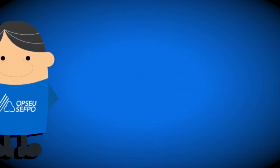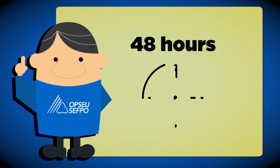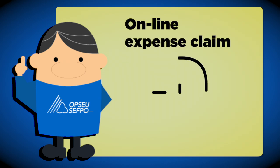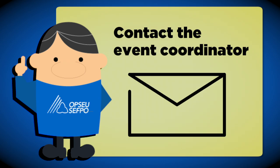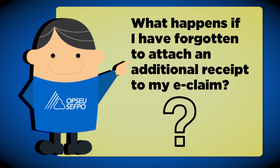If the event claim status states Did Not Attend, OPSU will update all attendance registers within 48 hours after the event has concluded. After they have been updated, members will be able to submit an online expense claim. If the event register is not updated within the allotted time period, please contact the event coordinator.